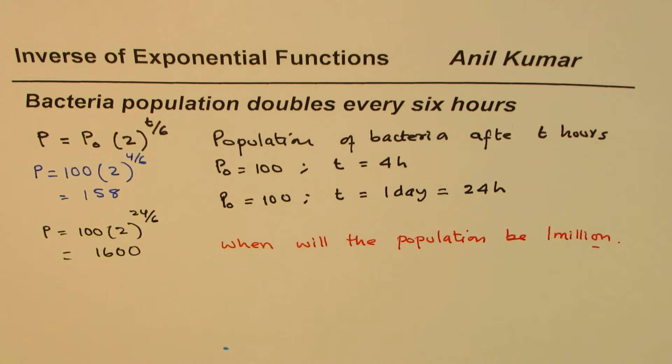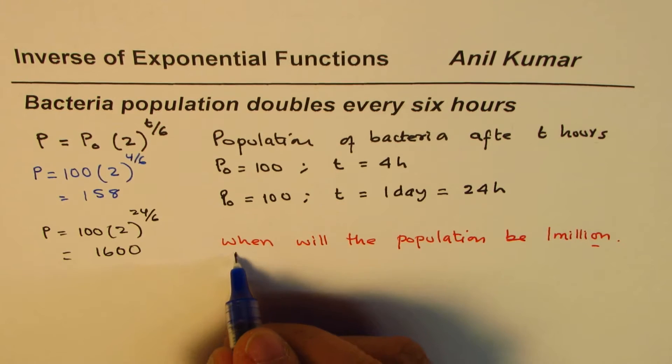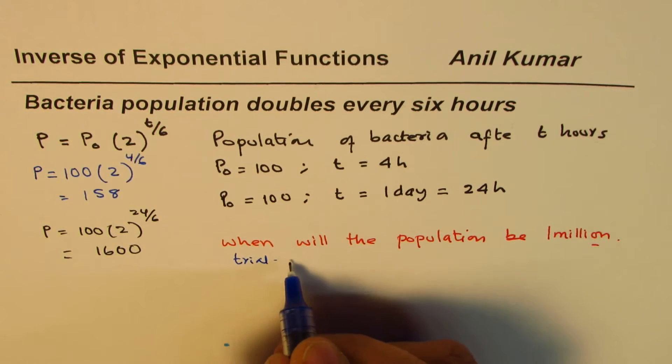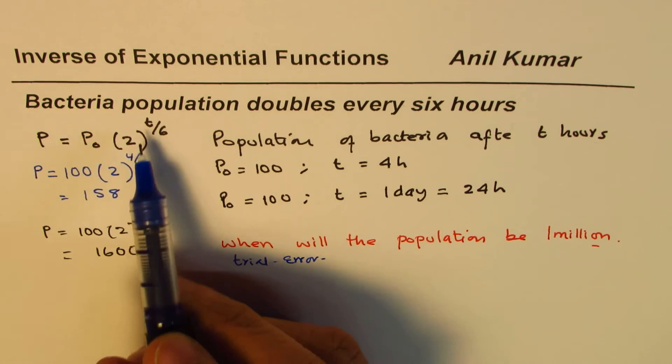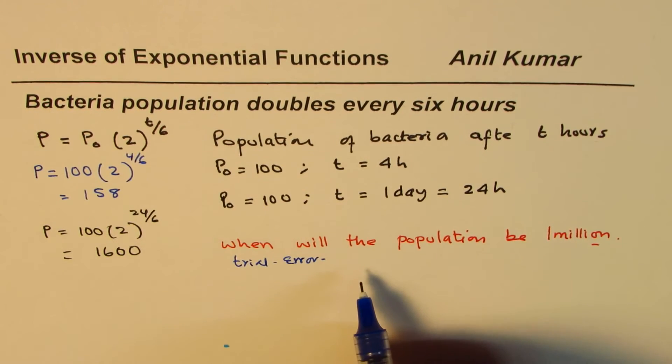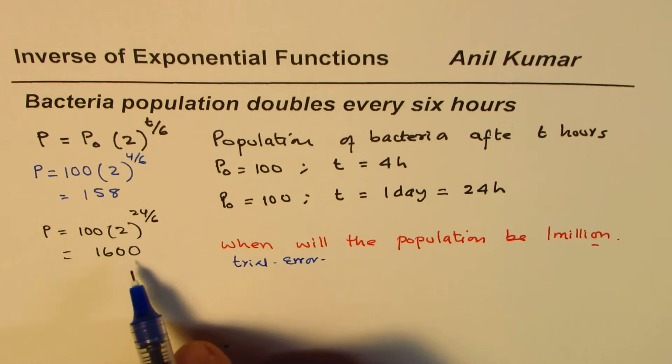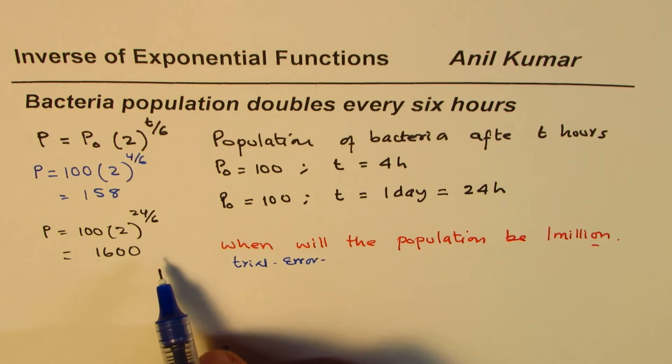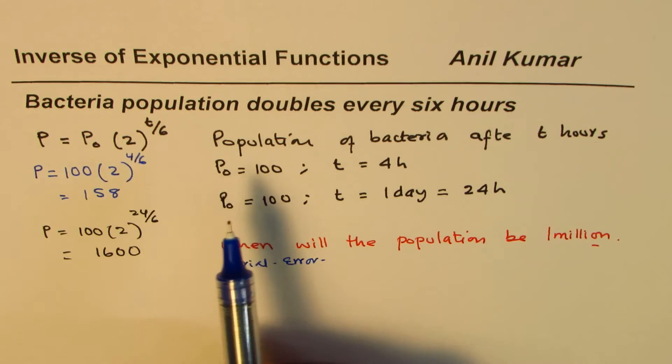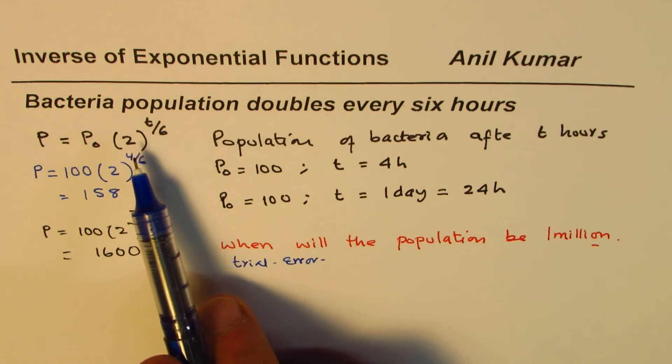Well, one thing could be trial and error. You could also do trial and error, so what happens here is substitute different values of t and then check with calculator when you get a value which is close to 1 million. The reason being that we have not yet learned anything about inverse of exponential function.